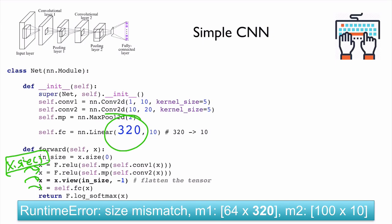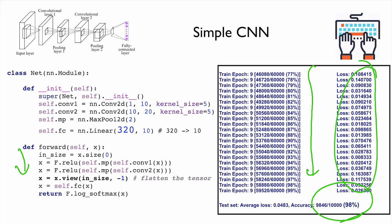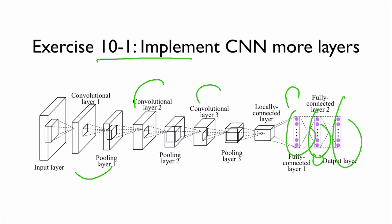The rest of the training is the same as the softmax classifier — forward pass, compute loss, backward, and update. As you can see, the loss goes down and accuracy reaches 98%, which is much better than before. Now that we understand CNN, we can try adding more layers — three or four layers — and multiple fully connected layers as an exercise. You can also try different kernel sizes to see which works better. In our next lecture, we will talk about much more exciting advanced CNN architectures.